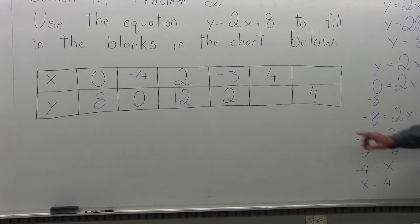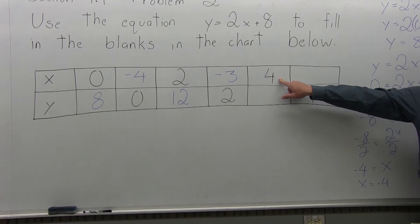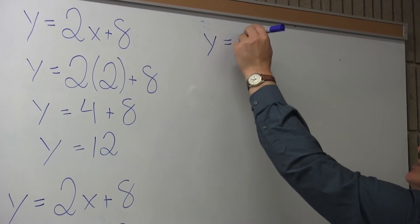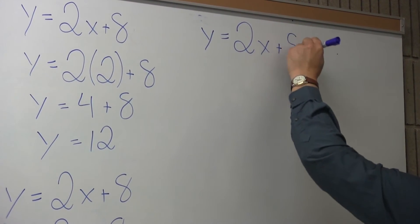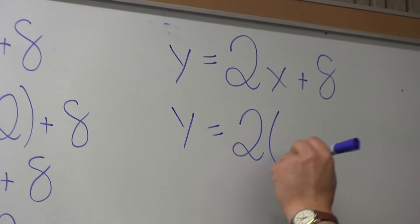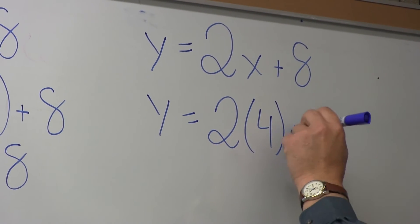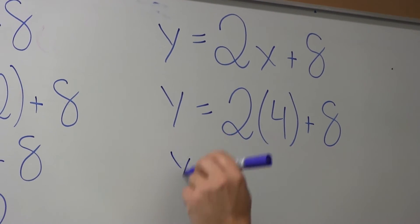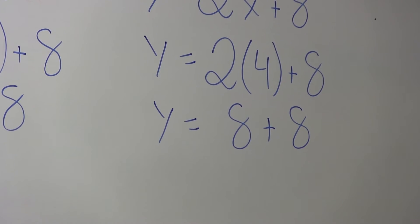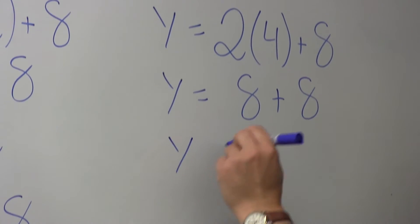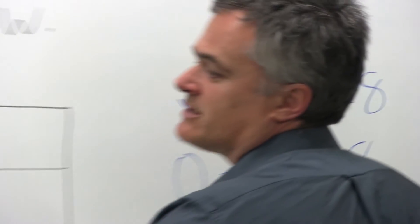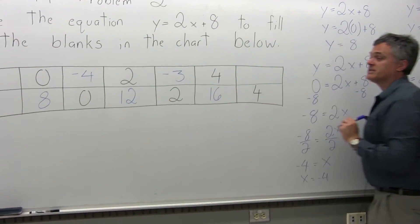The next part of the chart says if x is 4, what is y? Using y equals 2x plus 8 with x equal to 4: y equals 2 times 4 plus 8. 2 times 4 is 8, so you get 8 plus 8, which is 16. When x is 4, y is positive 16. Always pay attention to the positive or negative.